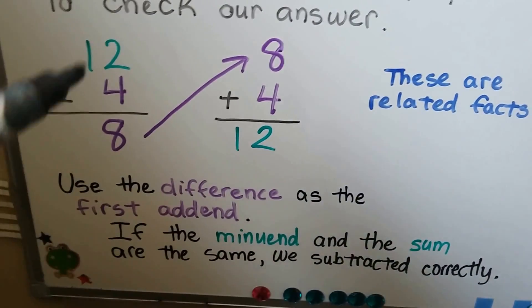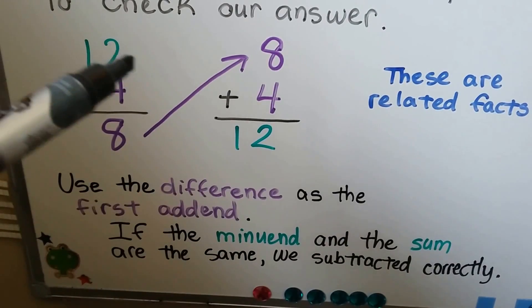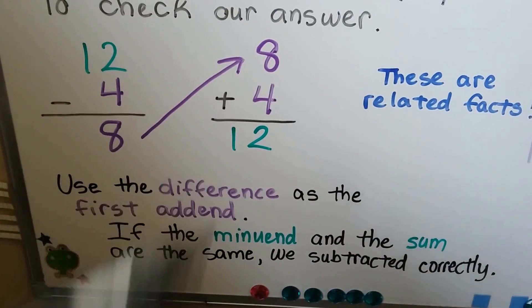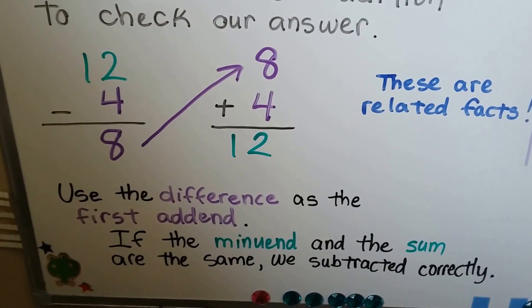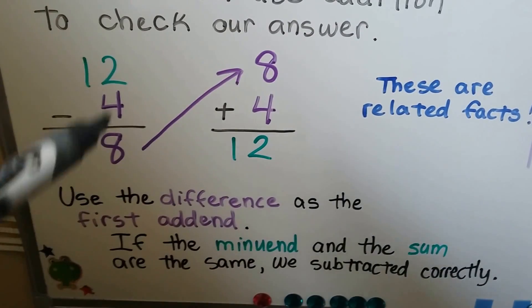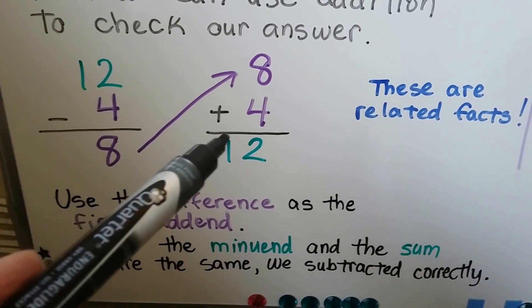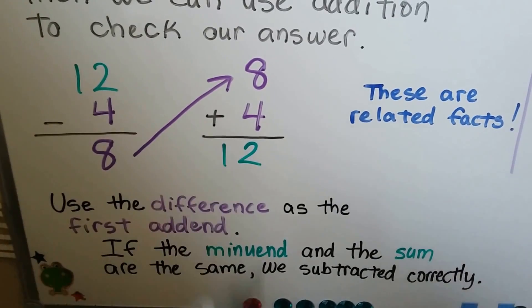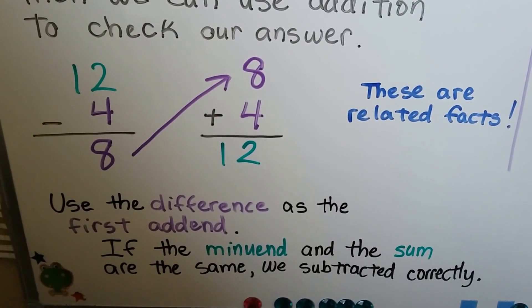If the minuend, twelve, and the sum, twelve, are the same, we subtracted correctly. So whatever the minuend is, if it ends up as our sum, we know we did the subtraction correctly.